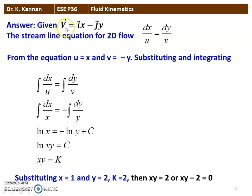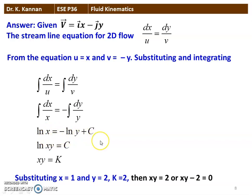Again, the velocity vector V = iX - jY. The stream line equation for two-dimensional flow: dx/U = dy/V. From the equation U = X, V = -Y. Substituting and integrating: ∫dx/X = -∫dy/Y. Integrating gives ln(X) = -ln(Y) + C, rearranging: ln(XY) = C, so XY = K. Substituting X = 1, Y = 2 gives K = 2, then XY = 2, or XY - 2 = 0. The stream line equation is XY - 2 = 0.